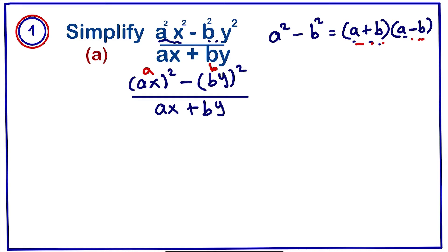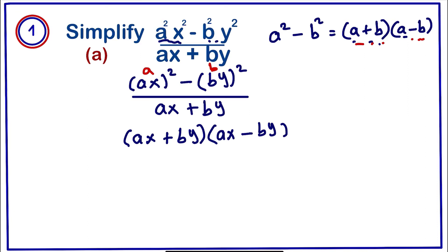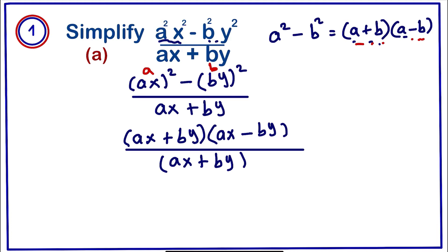Using the formula, the numerator becomes (ax + by)(ax - by), all divided by (ax + by). We can see that (ax + by) cancels on both the numerator and denominator. So our answer for question 1a is ax - by.